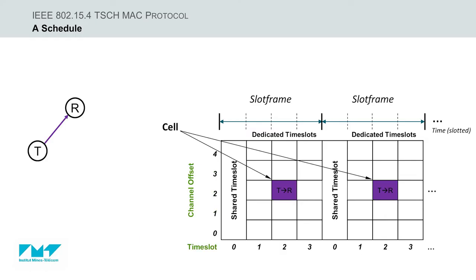An element in the schedule matrix is called a cell, which is defined by the time slot offset and channel offset pair. A cell's time slot offset indicates its position in time relative to the beginning of the slot frame.